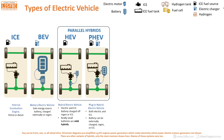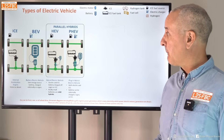These are what we call parallel hybrids — so named because both motors, the ICE and the electric motor, can turn the wheels at the same time using the same mechanism.